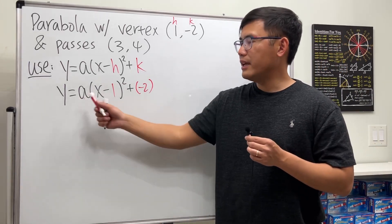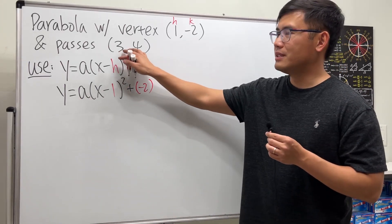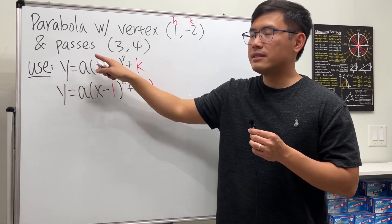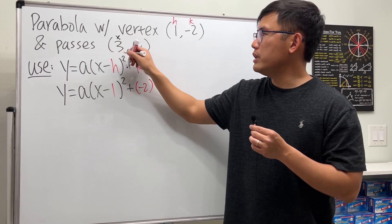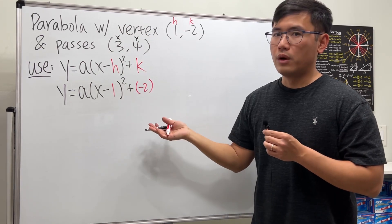Well, what's a though? Don't worry, we still have this point that we can use. When we said it passes through 3 comma 4, that means when x is equal to 3, y has to be equal to 4.